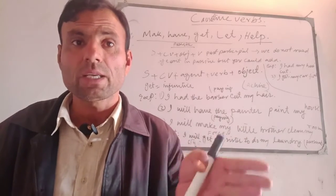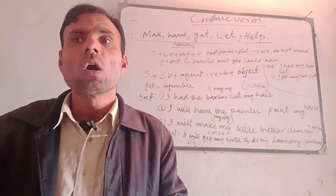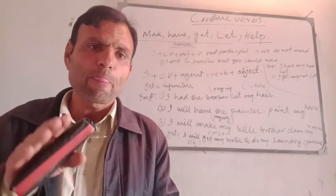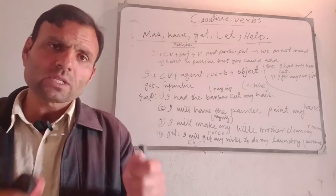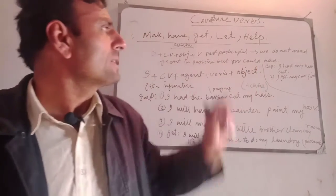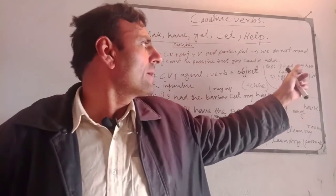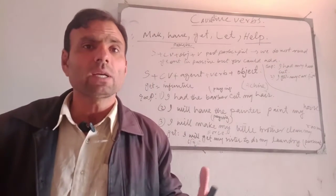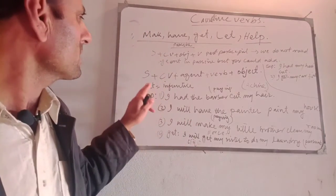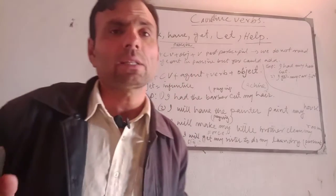Where you persuade someone equal to you, you use 'get.' Where you force someone, you use 'make.' Where you commission or pay someone, you use 'have.' In passive causative, the agent is optional — for example: 'I had my hair cut' — the barber is the agent, but you can include or omit him. The structure is: subject + causative verb + agent + verb + object.